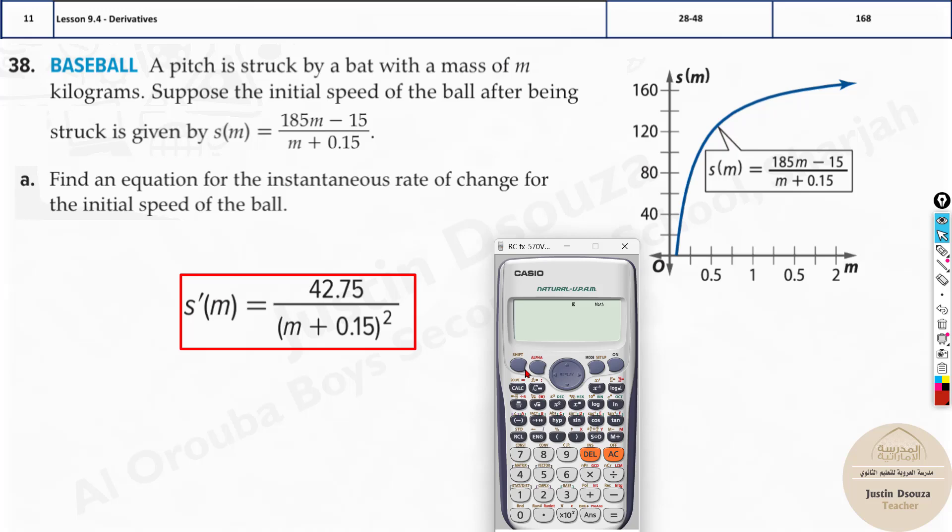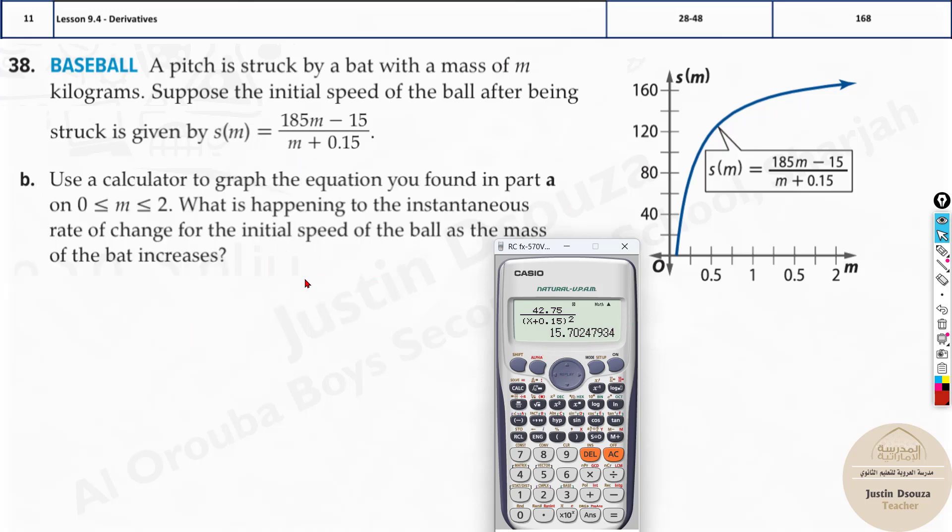I'll show it to you. Press shift and this integral symbol for derivation. Then 185m minus 15. The derivation in calculator can be only definite in the sense you need to have a value. So assume it to be 1.5 and solve it up. 15.7024. Now here all the options need to be solved. 42.75 divided by x plus 0.15, close the bracket and square it up. And now calculate it at 1.5. The answer is 15.7024, the same answer we got. So this is the correct answer.